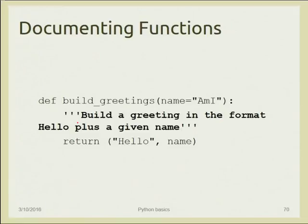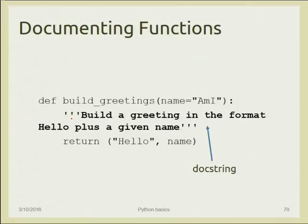Functions can be documented using a docstring — written as the first line after the function definition, enclosed in triple single quotes. The docstring can be a multi-line string and can be used to generate separate documentation for the function, separate from the code itself.